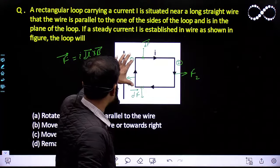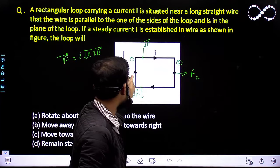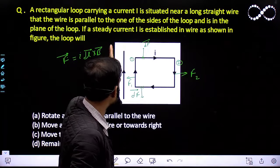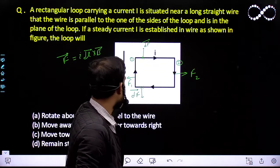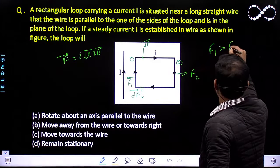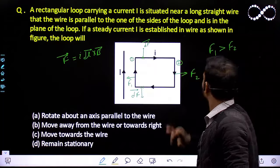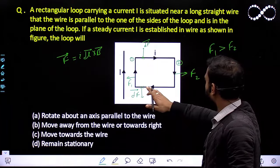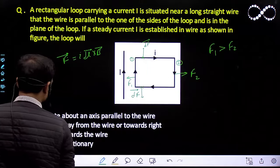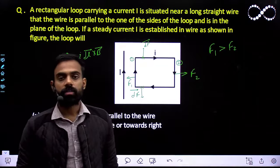Side 1 is closer to this straight wire and side 2 is farther away. So wire 1 is at a smaller distance from the straight wire, wire 2 is at a larger distance. Obviously, the magnitude of F1 will be greater than F2 — F1 > F2 — because side 1 is closer to the straight wire. So the net force will be towards the wire. The wire attracts the loop, so the loop will move towards the wire. Option C is correct. I hope you understood this question.